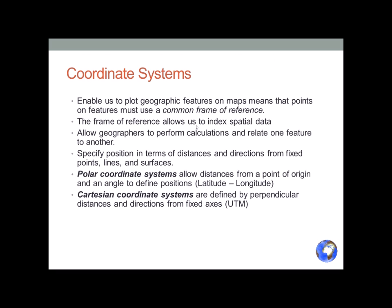We work with two major coordinate systems. Polar coordinate systems allow distances from a point of origin and an angle to define positions — those are called latitude and longitude. Cartesian coordinate systems, just like those studied in geometry, have an x-axis and a y-axis: x for easting and y for northing. That's the UTM system, which we'll talk about later.